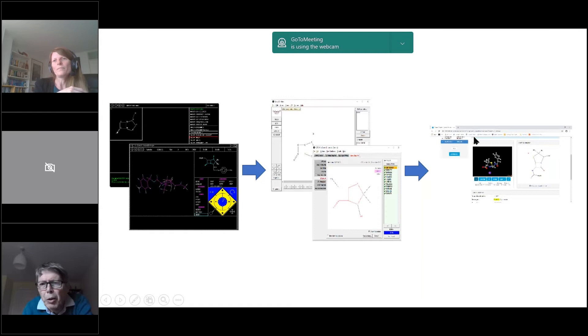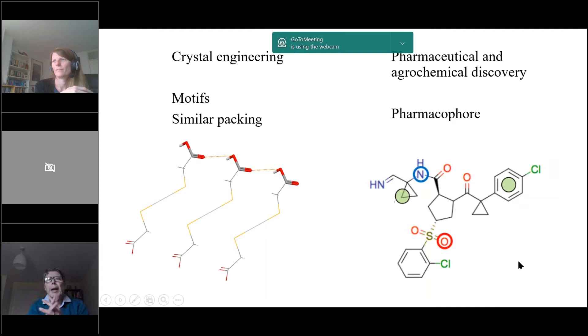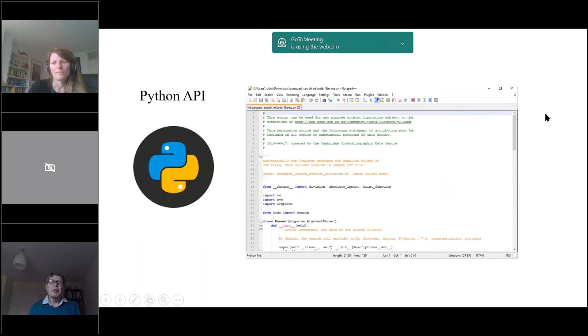We then had a phase of graphical interface development, first Quest and then Conquest and WebCSD. More recently there have been specific search functionalities developed with particular application areas in mind: crystal engineering, drug solid form design, and pharmaceutical and agrochemical discovery. The two I mentioned are the ability to search for motifs and CSD CrossMiner, which really is an awesomely powerful pharmaceutical package.